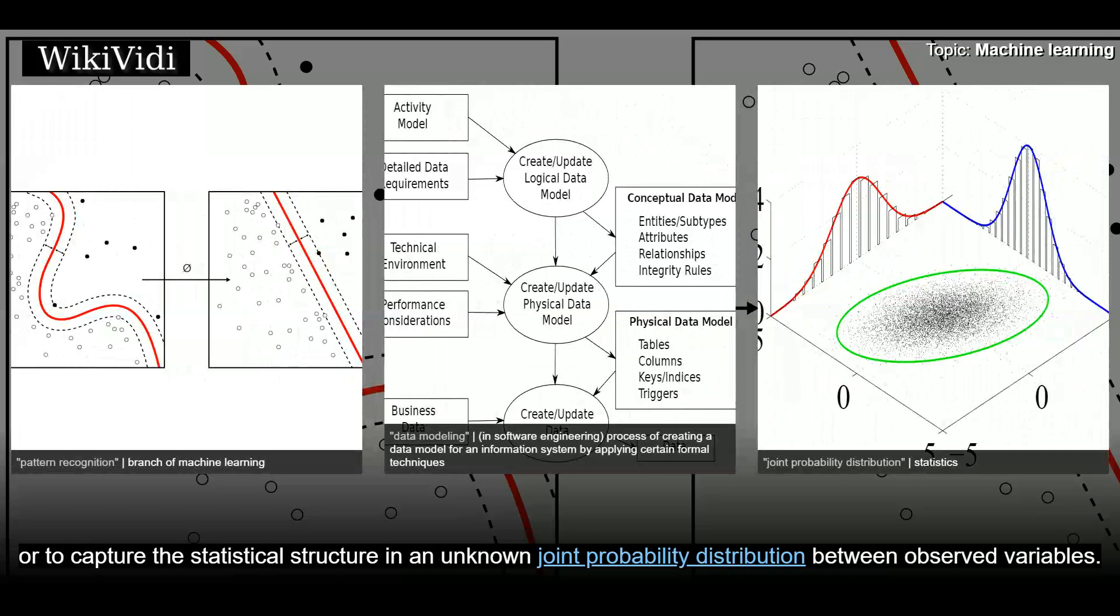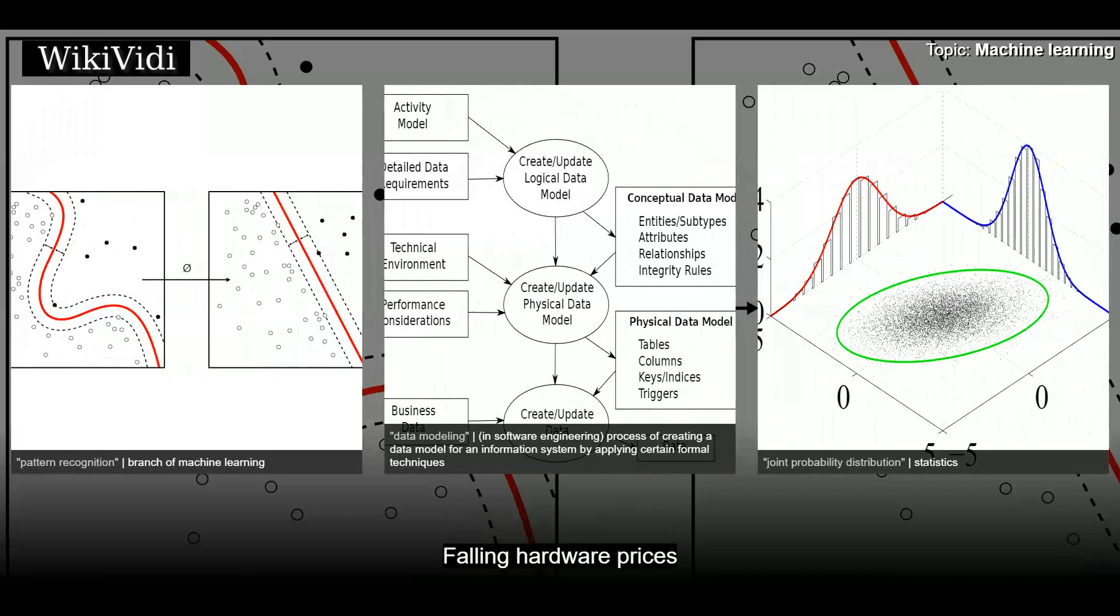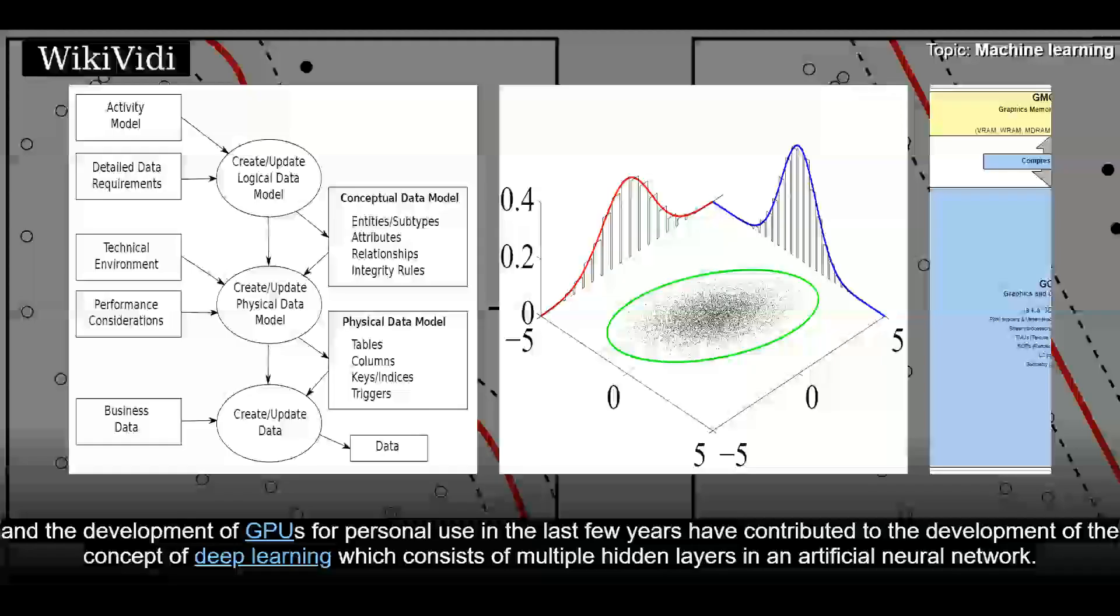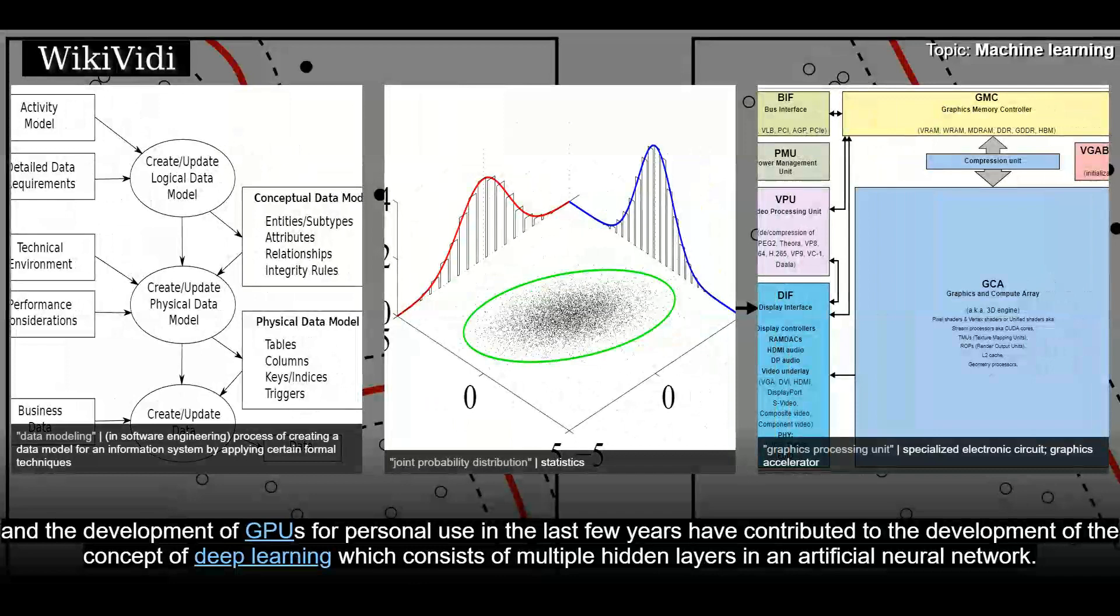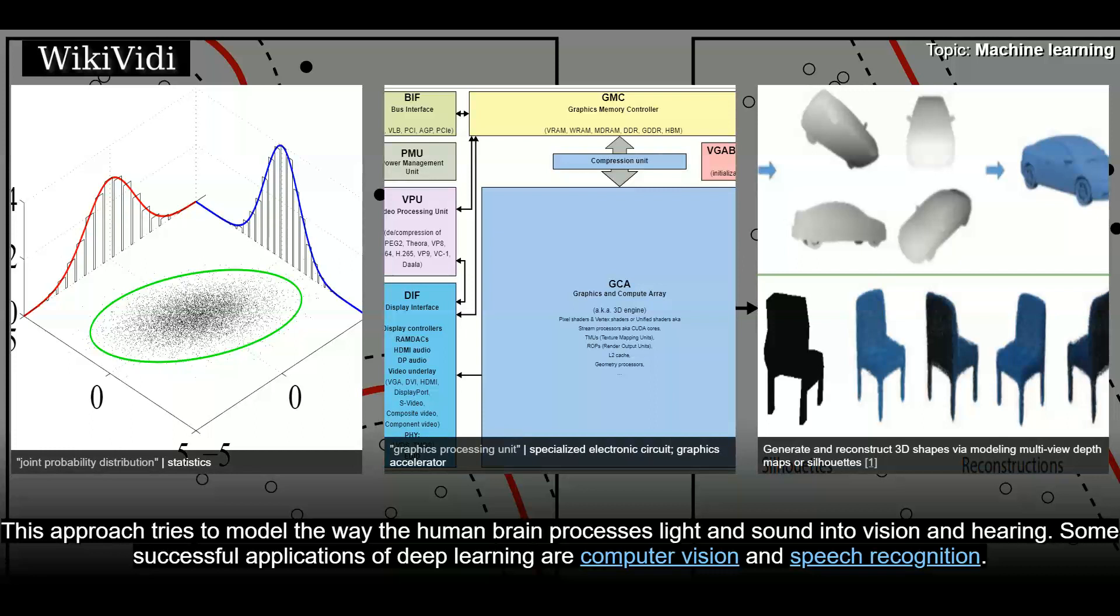Deep learning. Falling hardware prices and the development of GPUs for personal use in the last few years have contributed to the development of the concept of deep learning which consists of multiple hidden layers in an artificial neural network. This approach tries to model the way the human brain processes light and sound into vision and hearing. Some successful applications of deep learning are computer vision and speech recognition.